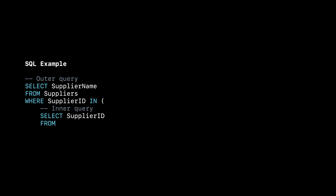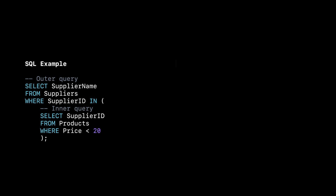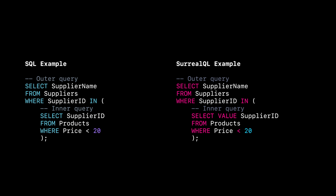A semi-join is a subquery that filters the outer query with results of the inner query. Now that we've got the dictionary definition out of the way, let's look at the code. As SurrealQL is a SQL-like language, you'll notice that the examples will look very similar. See if you can spot the single word difference in the queries.